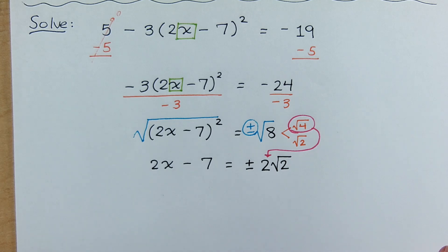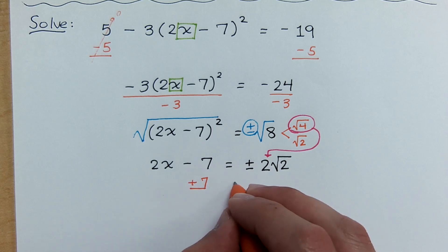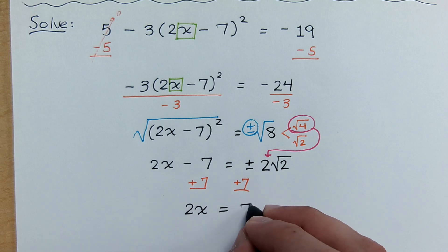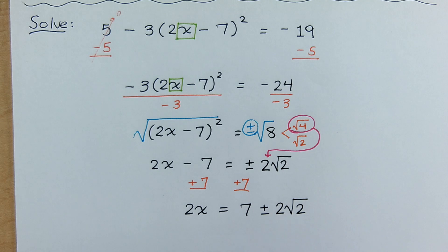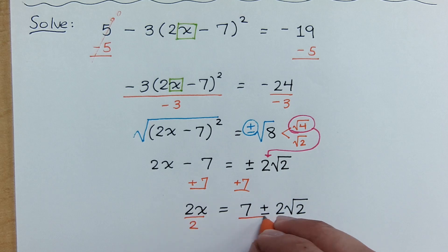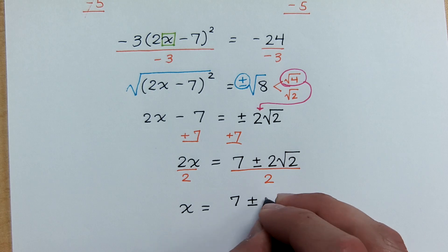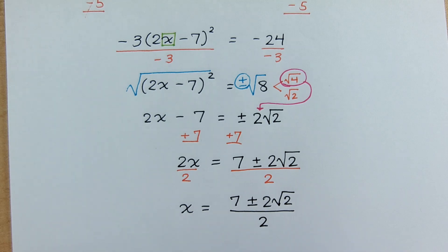At this point, it's just like a lot of the square root property problems that we've encountered. Get X by itself — now we add the 7. And remember, when you move terms from one side to the other and you already have a plus or minus, you put that term in front of the plus or minus, because the plus or minus is only affecting 2 square roots of 2. Then divide both sides of the equation by 2, and that gives us X completely by itself. X equals 7 plus or minus the square root of 2, all over 2.